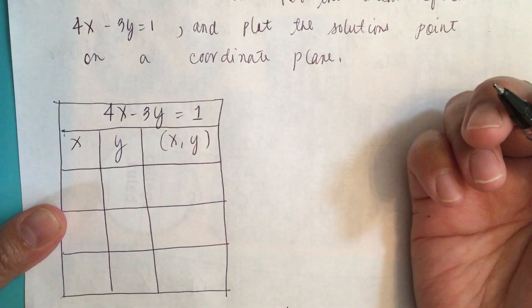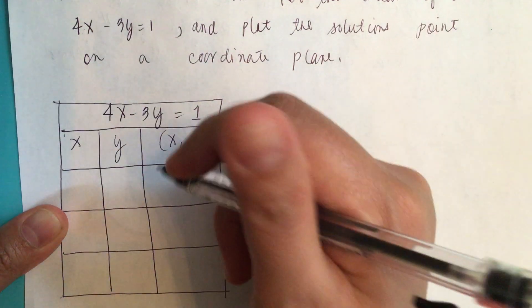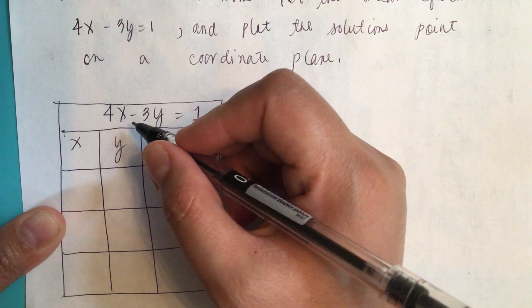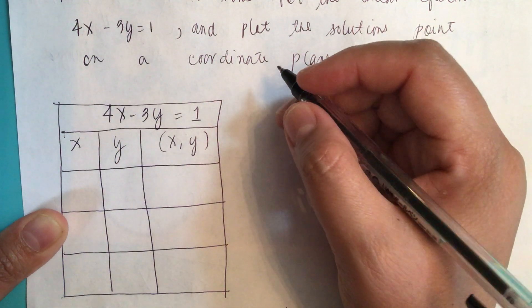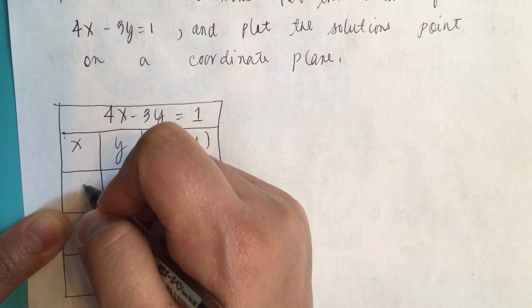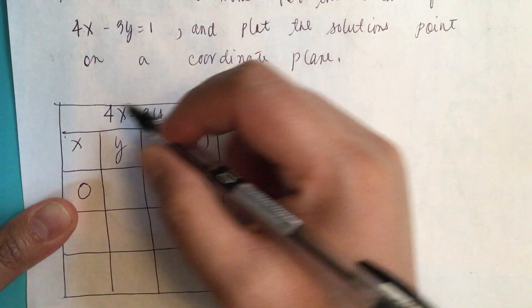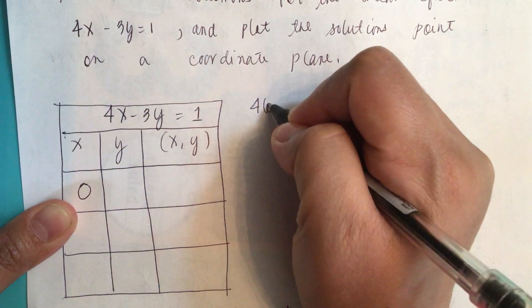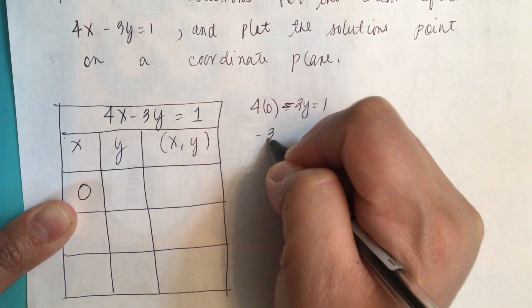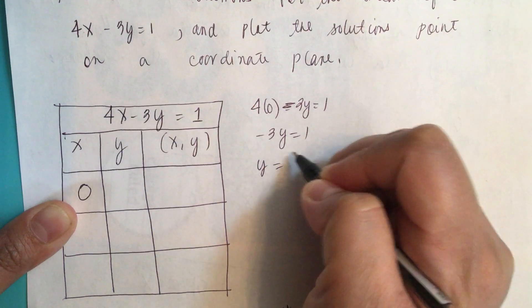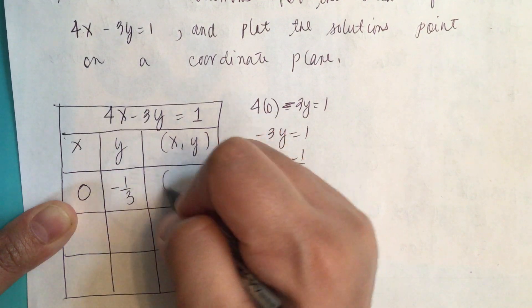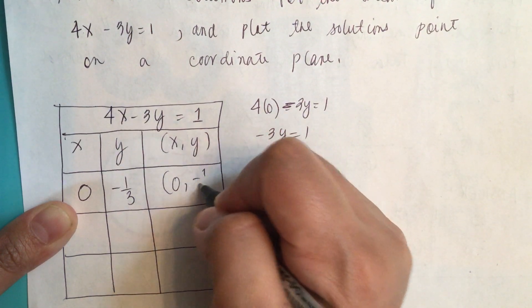So let's make a table here. We can choose any number. So when x equals 0, we have 4 times 0 minus 3y equals 1, or minus 3y equals 1, so y equals negative one-third. So 0 comma negative one-third.